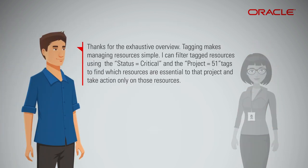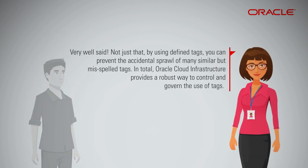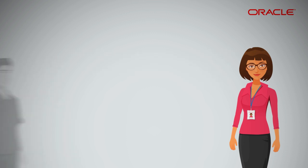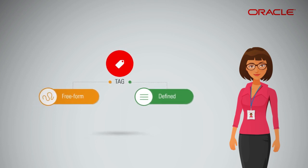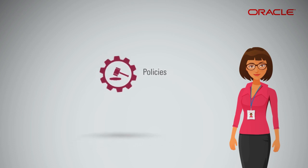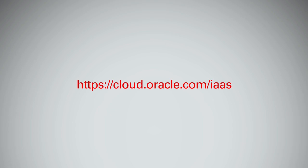Tagging makes managing resources simple. You can filter tagged resources using tags like 'status equals critical' and 'project equals 51' to find which resources are essential to a project and take action only on those resources. By using defined tags, you can prevent the accidental sprawl of many similar but misspelled tags. Oracle Cloud Infrastructure provides a robust way to control and govern the use of tags — a powerful foundational service enabling administrators to write comprehensive management scripts and policies based on their own organizational structure defined by tags. Please go to the Oracle Cloud Infrastructure portal to learn more and sign up for the free trial.